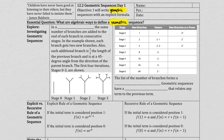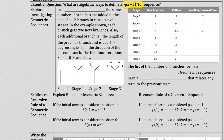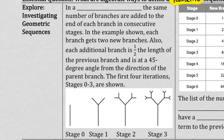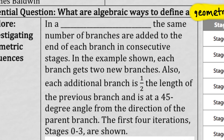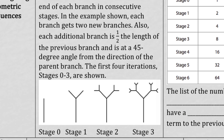Let's get started by exploring some geometric sequences. What you have here is what we call a fractal tree — 'fractal tree.' Pretty obvious because of what they look like, right? They have little branches that are extending and growing. 'Fractal' comes from 'fraction' — each new branch is a fraction of the original branch.